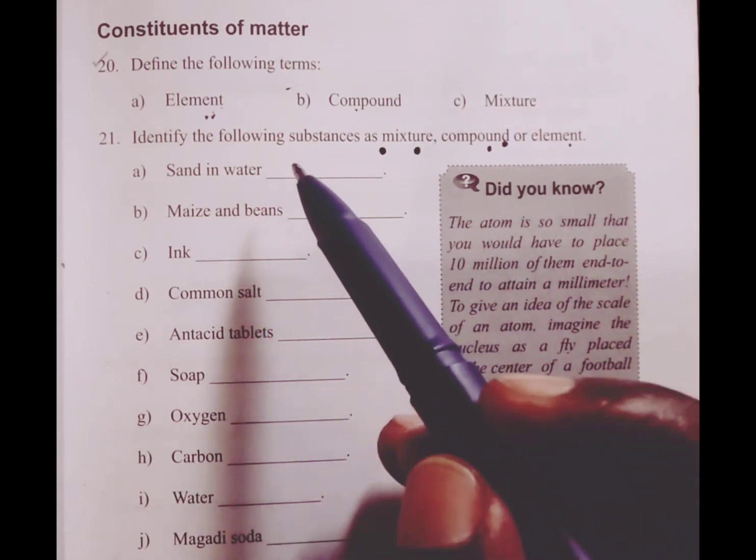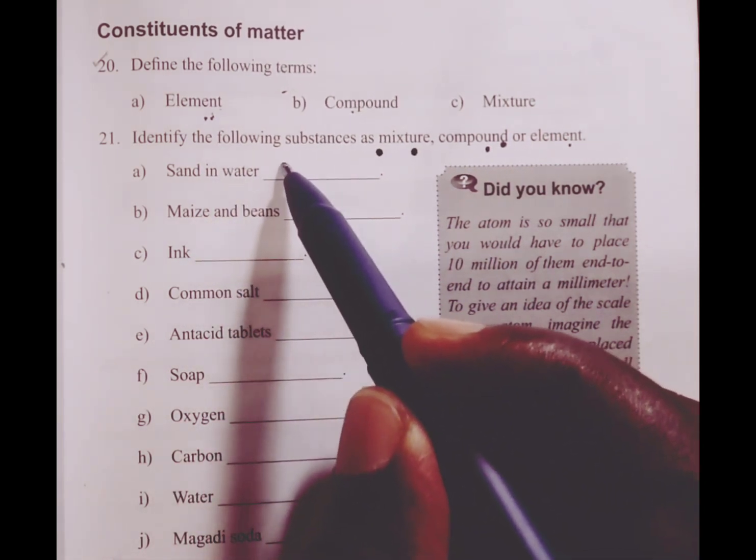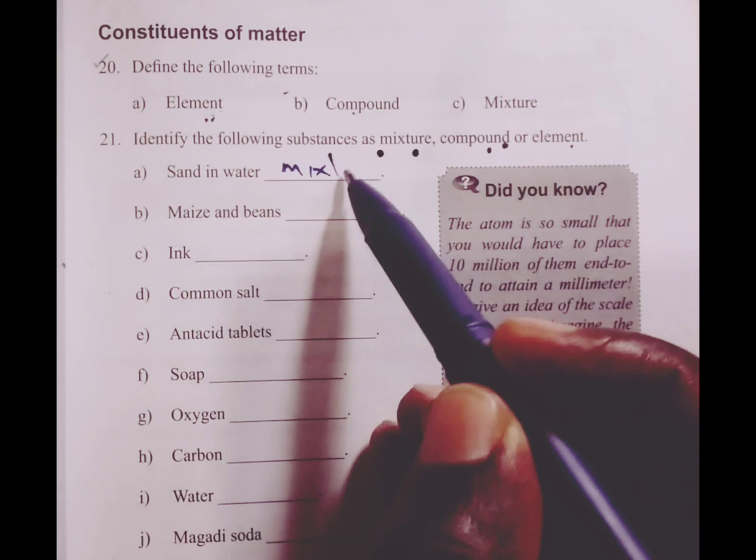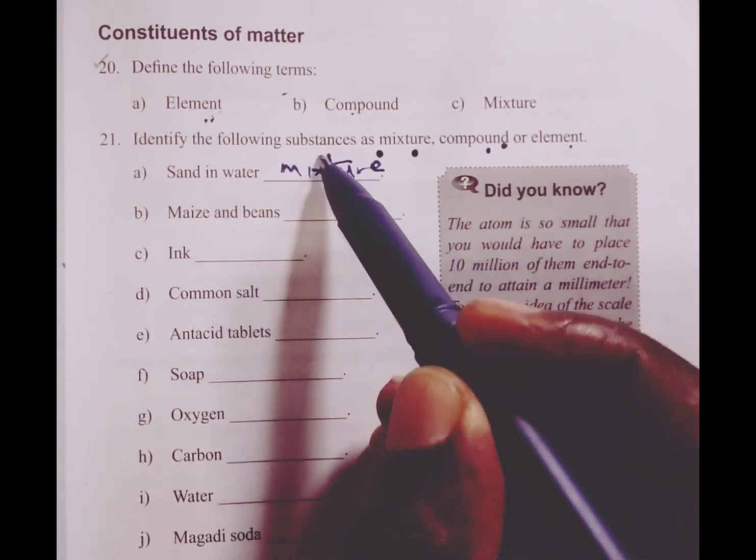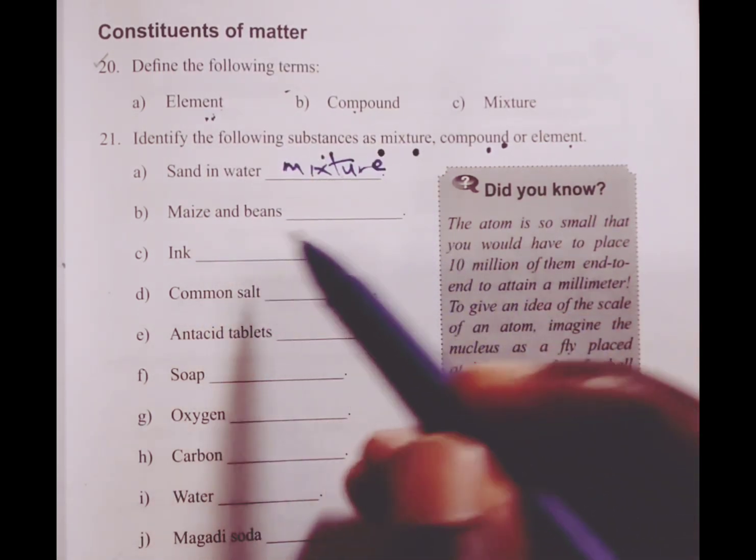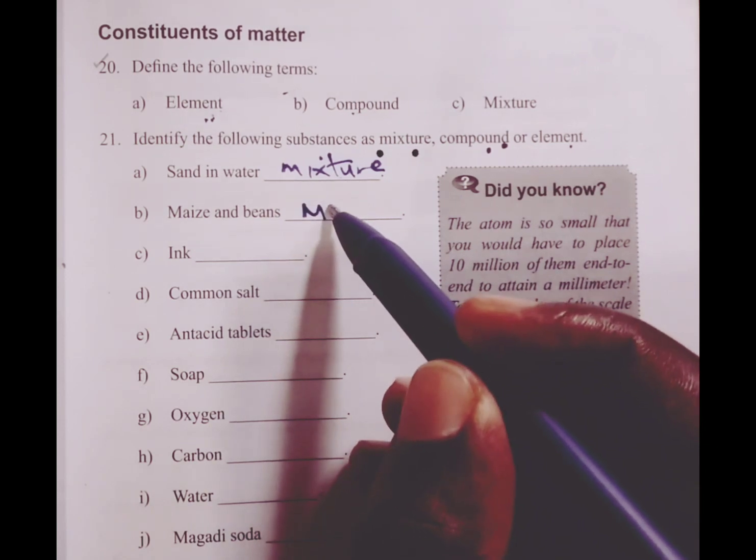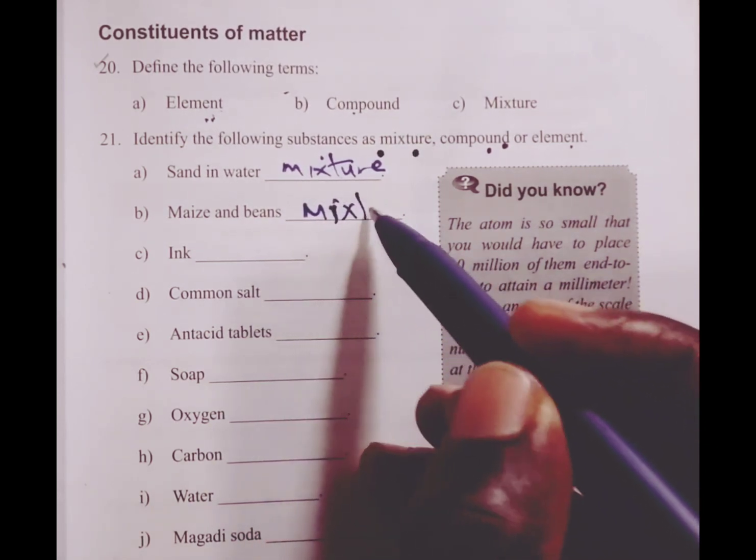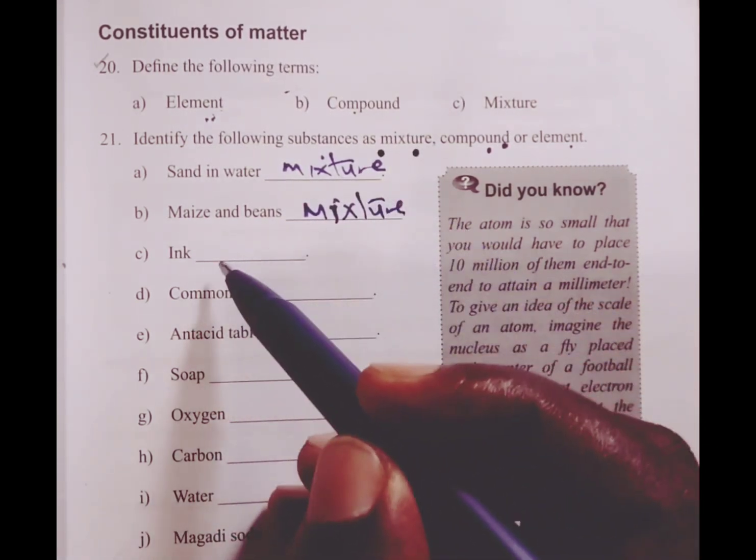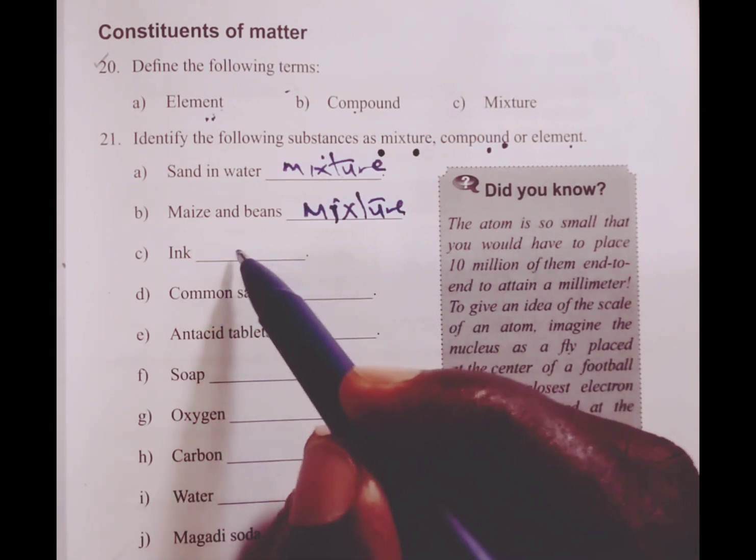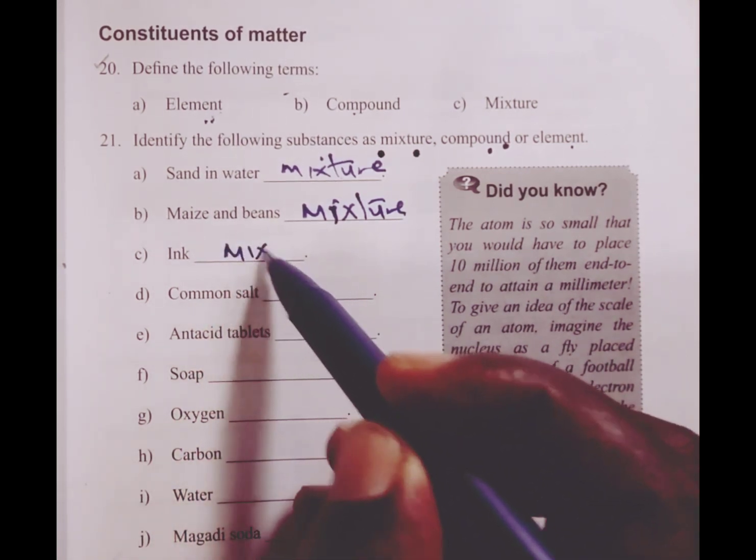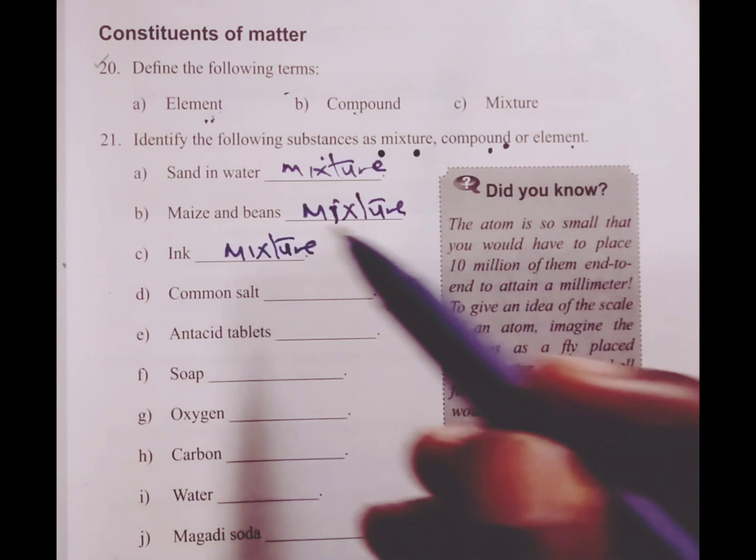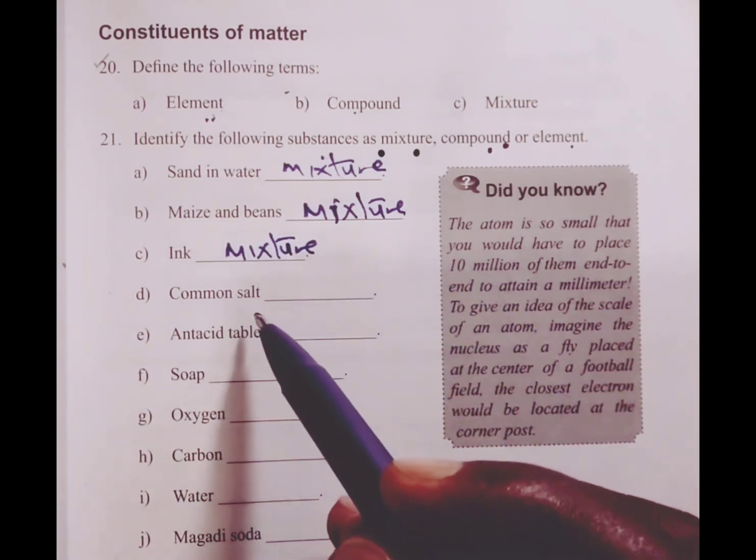One, we have sand and water. Sand and water form a mixture. We have maize and beans. Maize and beans give us a mixture. We have an ink. Ink also gives us a mixture. We have common salt. Common salt is a compound.